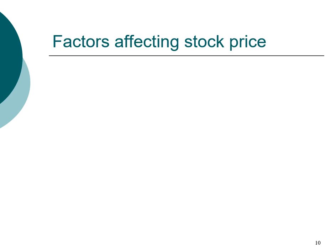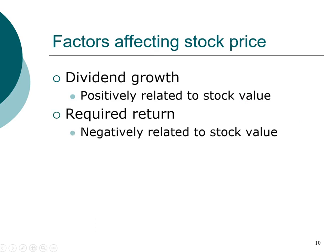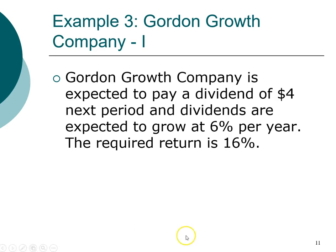From these two examples, we can see three main factors that affect stock price. First, the dividend growth rate is positively related to stock price — the faster the company grows, the more valuable it is and the higher the stock price. Second, the required return is negatively related to stock price because it is the discount rate: the higher the discount rate, the lower the present value.